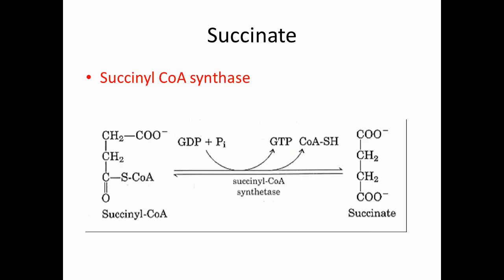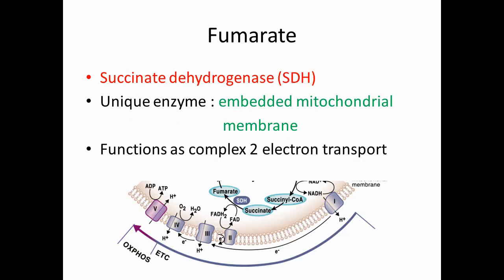The next step is succinate. Succinate is converted from succinyl-CoA with the help of succinyl-CoA synthetase, and in this process it produces one GTP molecule. Fumarate is then converted from succinate with the help of succinate dehydrogenase, a very unique enzyme embedded into the mitochondrial membrane that functions as Complex II in the electron transport chain.